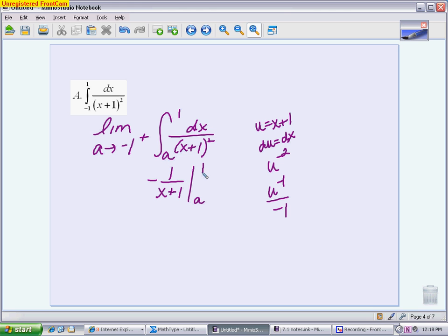Next step is to put your boundaries in, top minus bottom. So I get negative 1 over 1 plus 1 minus a minus, so plus 1 over A plus 1. One of the pieces should be a constant, so deal with that one first. So this one is going to be negative 1 half.